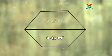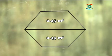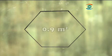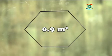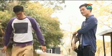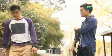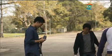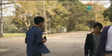In other words, the area of each trapezium is 0.45 square metres, and the sum of the areas of the two trapeziums equals 0.9 square metres. Therefore, the area of the hexagon is 0.9 square metres. This place is so special. The photos taken here will definitely impress my clients.